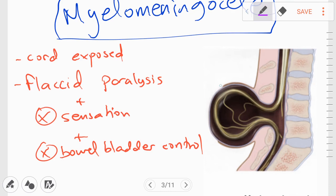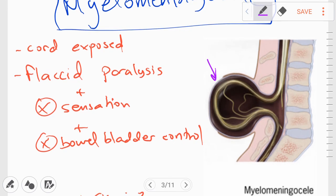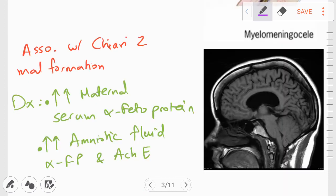The key features of myelomeningocele include, first of all, spinal cord is completely exposed, as you can see over here. And this results in flaccid paralysis and loss of sensation in the legs, and it can also result in incontinence of bowel and bladder. Another certain feature that we need to understand here is that myelomeningocele is associated with Chiari 2 malformation. Chiari 2 malformation is characterized by the displacement of cerebellar tonsils and medulla through the foramen magnum. So here you can see that the cerebellar tonsils and brainstem have displaced downwards. And this downward displacement can result in hydrocephalus by compressing on the outflow of CSF.